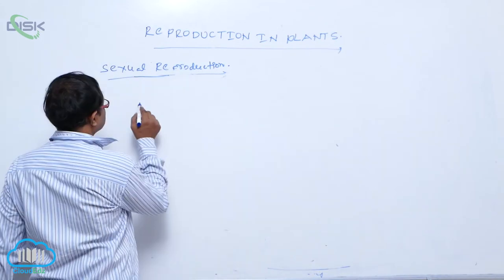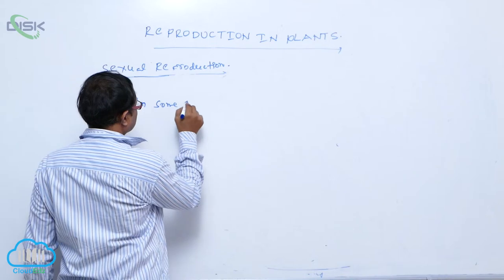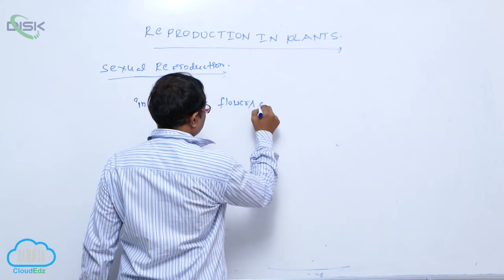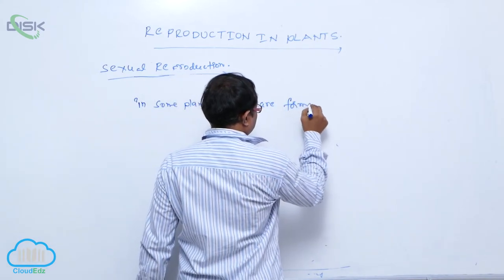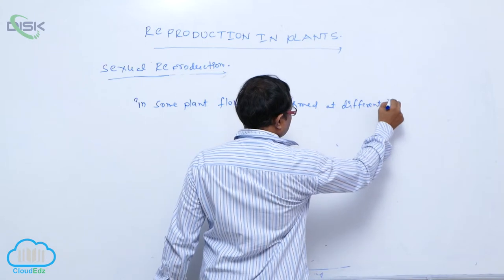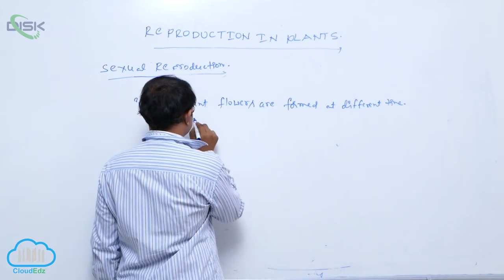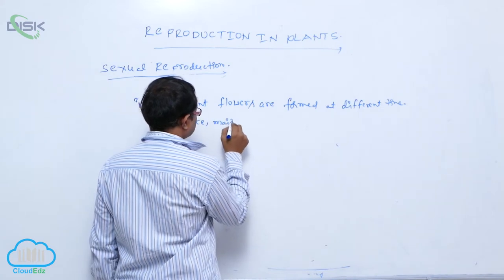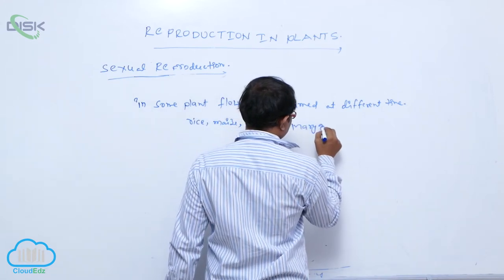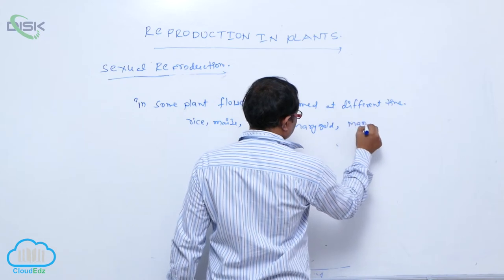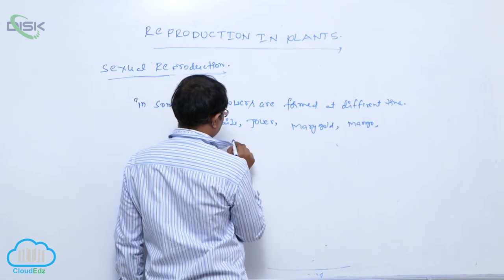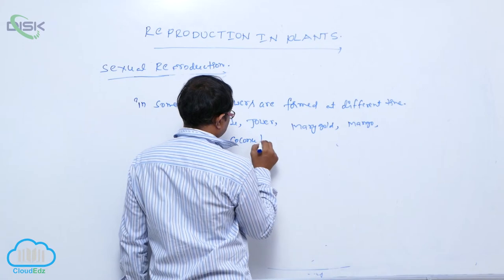In some plants, flowers are formed at a different time. For example, rice, maize, jawa, marigold, mango, coconut, and wheat.